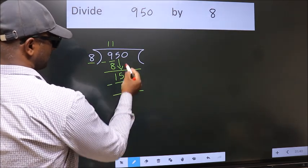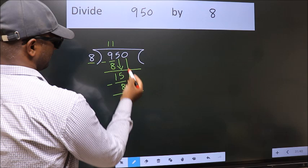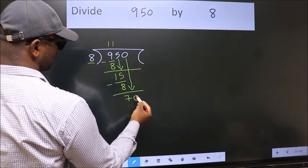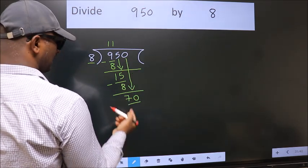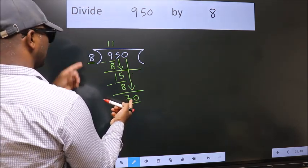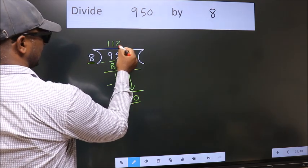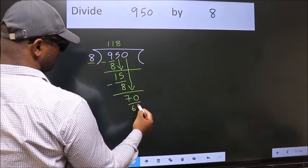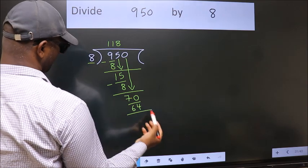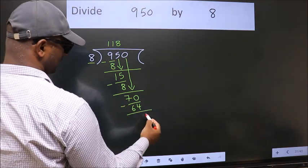After this, bring down the beside number. So 0 down. So 70. A number close to 70 in 8 table is 8 8 64. Now we subtract. We get 6.